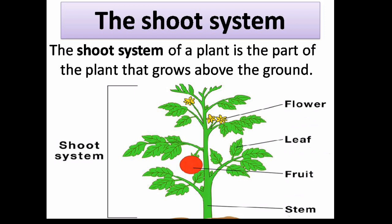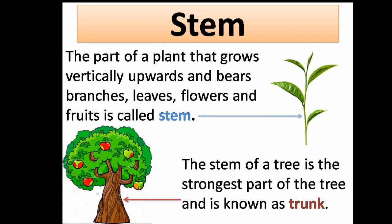The shoot system is the part of the plant that grows above the ground, and it has stem, fruit, leaves, and flower. The part of a plant that grows vertically upwards and bears branches, leaves, flowers, and fruits is called the stem. The stem of a tree is the strongest part and is known as the trunk.